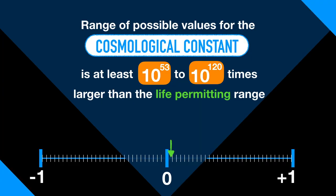The point is that the actual value of the cosmological constant lies in an extraordinarily narrow, life-permitting range, compared to the possible value that it could have been. The range of possible values for the cosmological constant is at least 10 to the 53rd, according to physicists who err on the side of skepticism, to 10 to the 120th times larger than the life-permitting range.